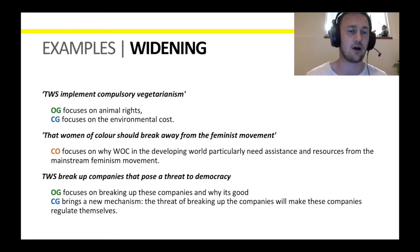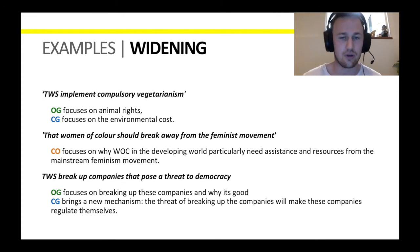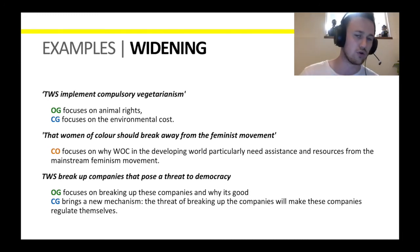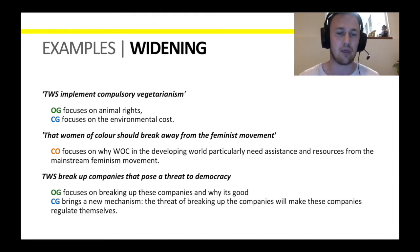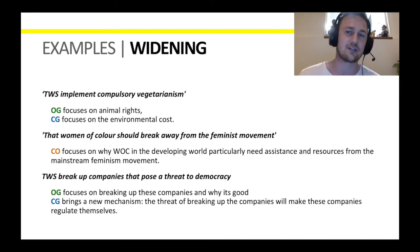The third widening extension example: the topic that we should break up companies that pose a threat to democracy. Opening government might naturally focus on why breaking up these companies is good. But a clever closing government might bring in a new mechanism — the threat of being broken up will make these companies regulate themselves. If you're Google or Facebook or Twitter, because this new policy is available, you're going to work extra hard to prove you're not a threat to democracy. That might be a better way of fixing the problem than just breaking these companies up, which might have a lot of harm to the economy.